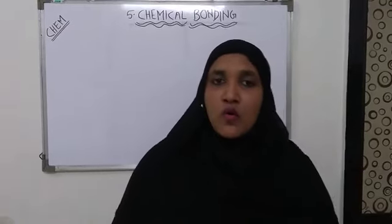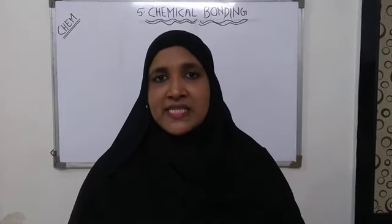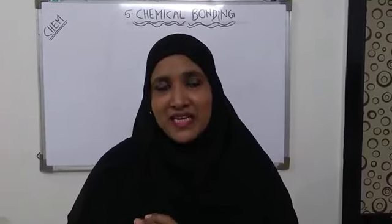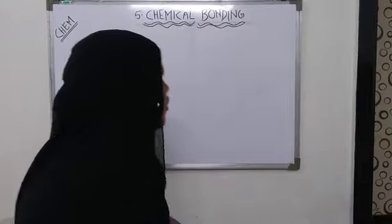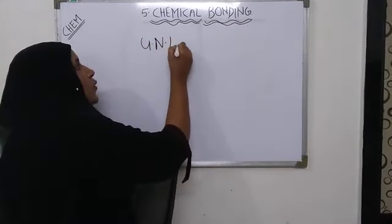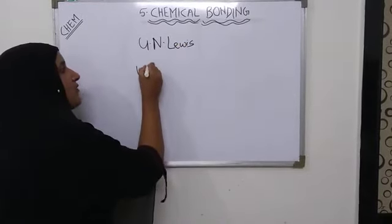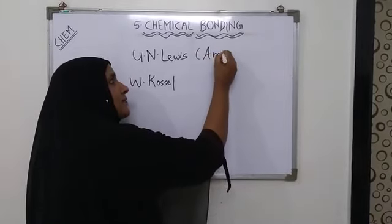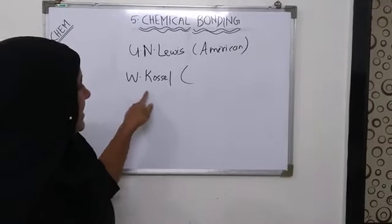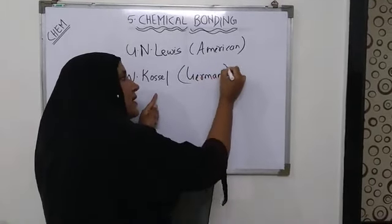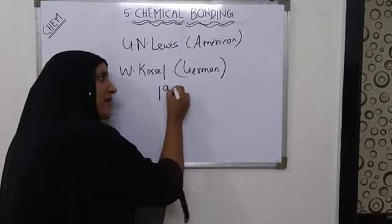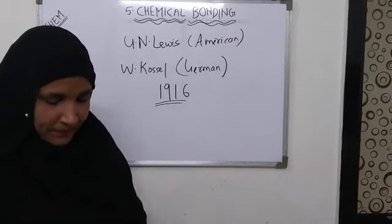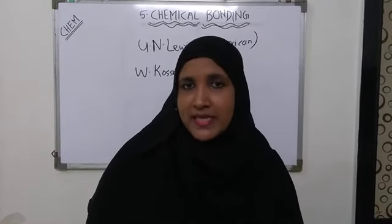There are two famous scientists who proposed their ideas in the year 1916. Both worked separately and independently, but explained the same thing. The scientists were G.N. Lewis, an American chemist, and W. Kossel, a German chemist. They presented a theory to explain the formation of bonds in different compounds and molecules, now known as the electronic theory of valency.